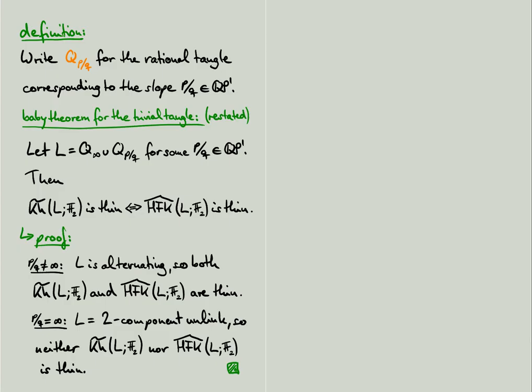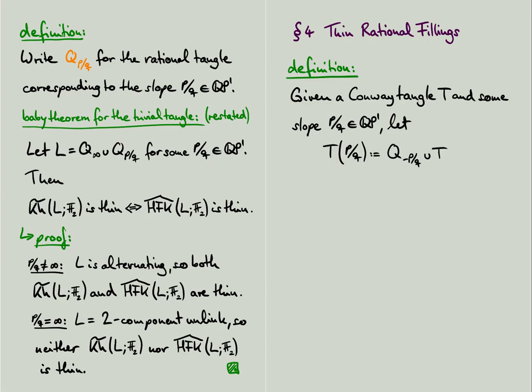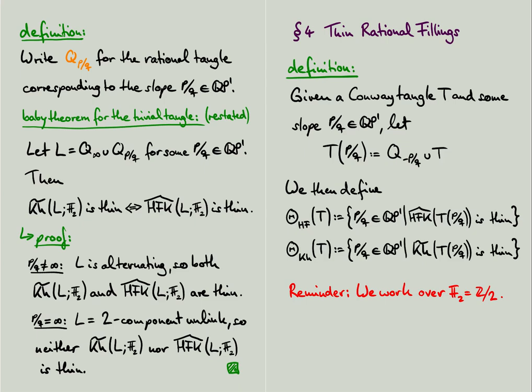Now that we know how to prove the baby theorem for rational tangles, let us modify the problem once more. Given any Conway tangle T and some slope p over q, let T of p over q denote the rational filling of T along that slope, that is, the union of T with the rational tangle of slope minus p over q. The sign here in the slope is just a matter of conventions. Then we define the space of knot-Floer thin rational fillings of T as the space of slopes p over q for which the knot-Floer homology of the link T of p over q is thin. And similarly, we define the space of Khovanov thin rational fillings of T.